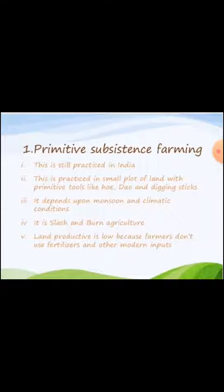Primitive subsistence farming is still practiced in India. It is practiced on a small piece of land with primitive tools like digging hoe, dao and digging sticks. It depends upon monsoon and climatic conditions. It is the most primitive form of farming, as the term refers, having been practiced by people at the very starting time of agricultural practices when they just started the process of agriculture.